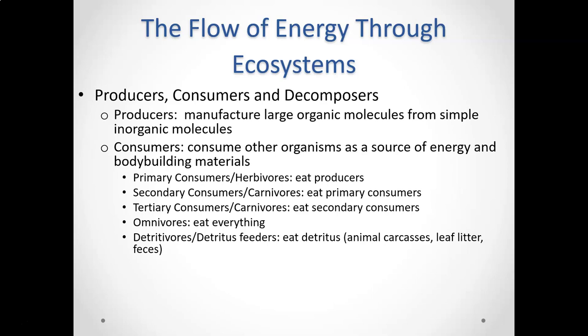We can also talk about trophic levels — where an organism fits in a food chain. Producers, consumers, and decomposers are trophic levels, and these can be broken down into primary, secondary, and tertiary. A primary consumer eats plants; a secondary consumer eats those herbivores; and a tertiary consumer eats other carnivores. It's just another way to look at a food chain.